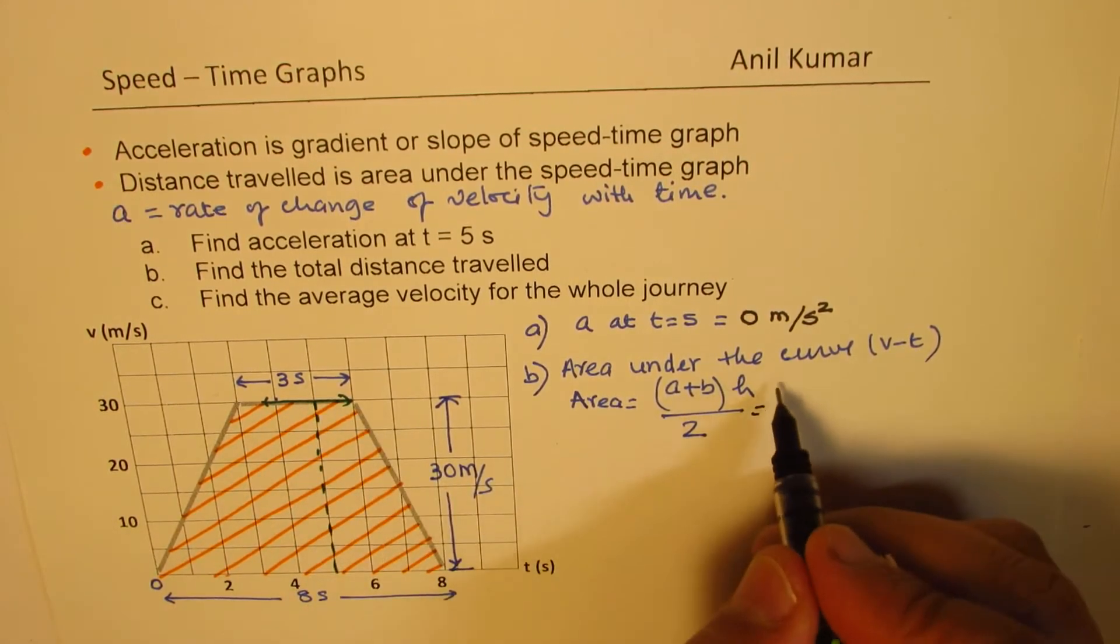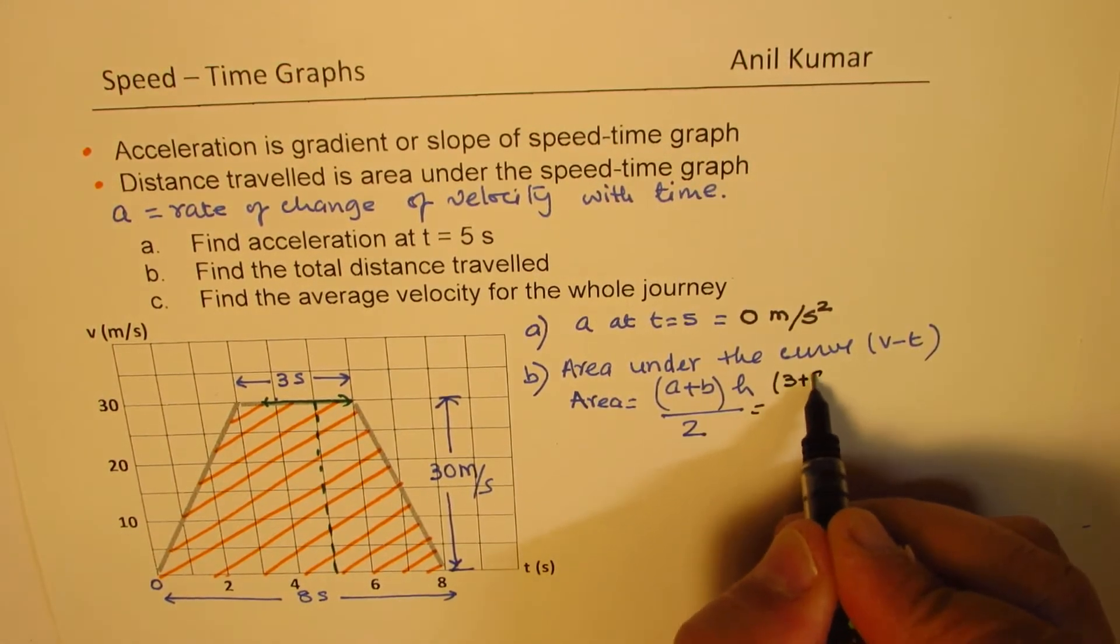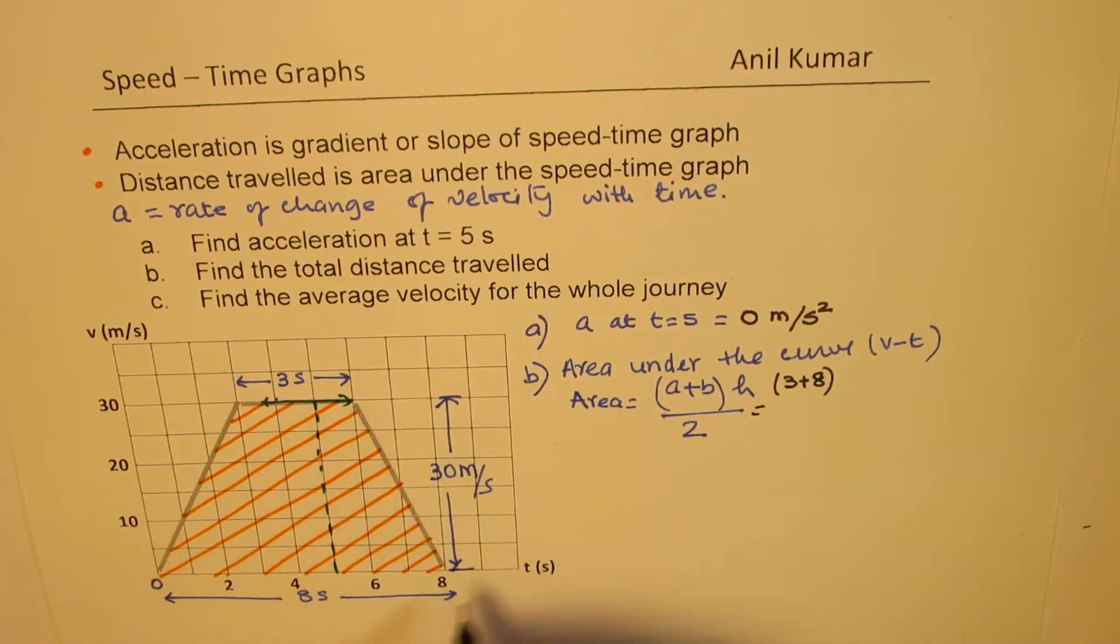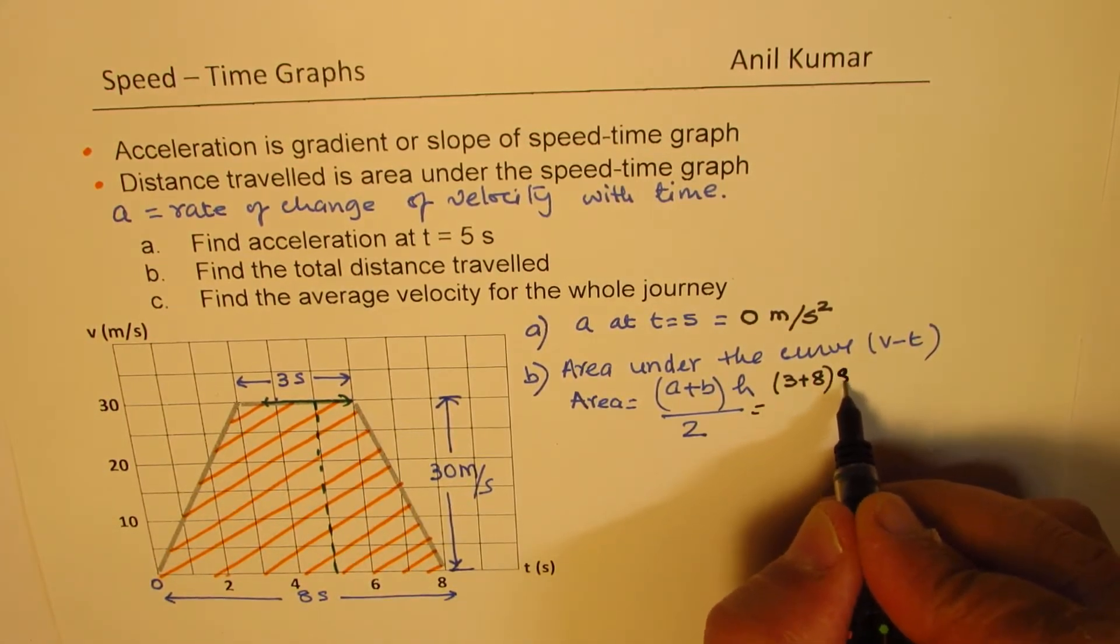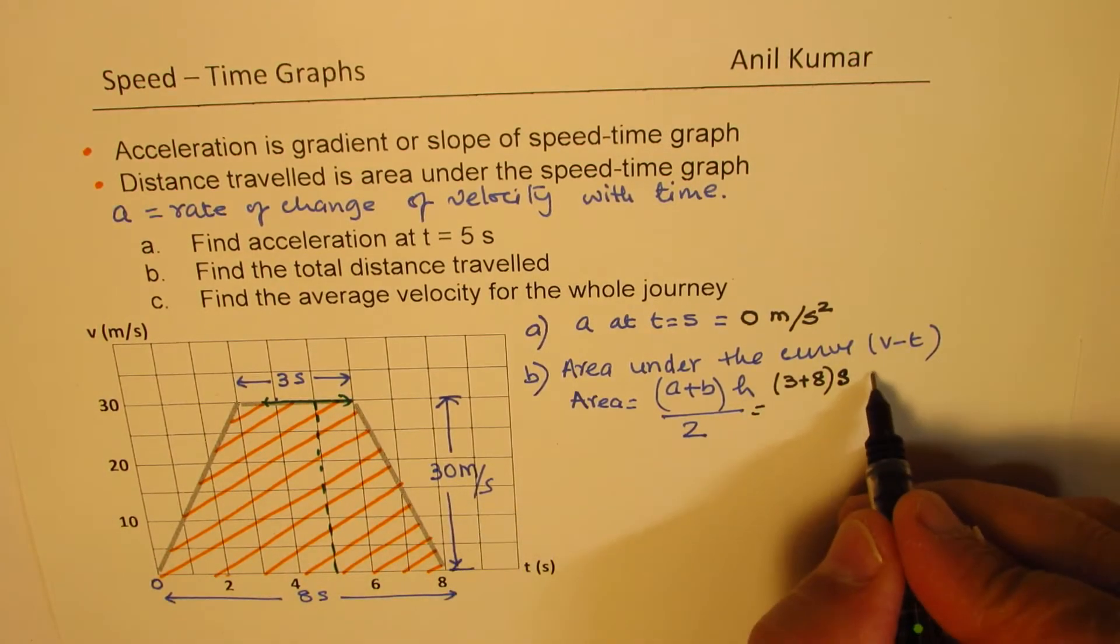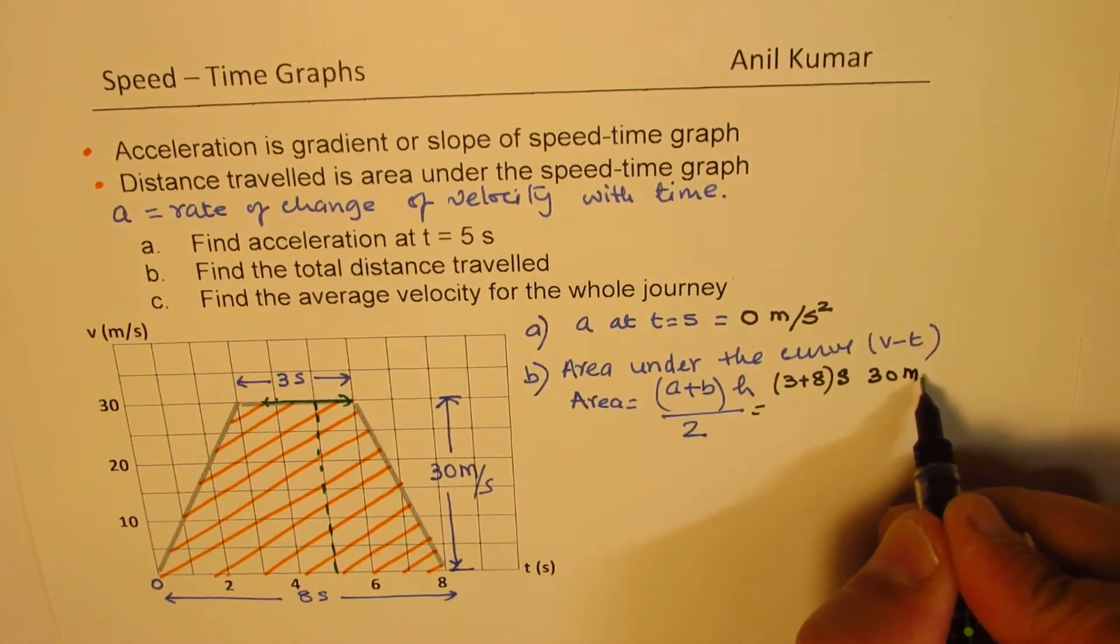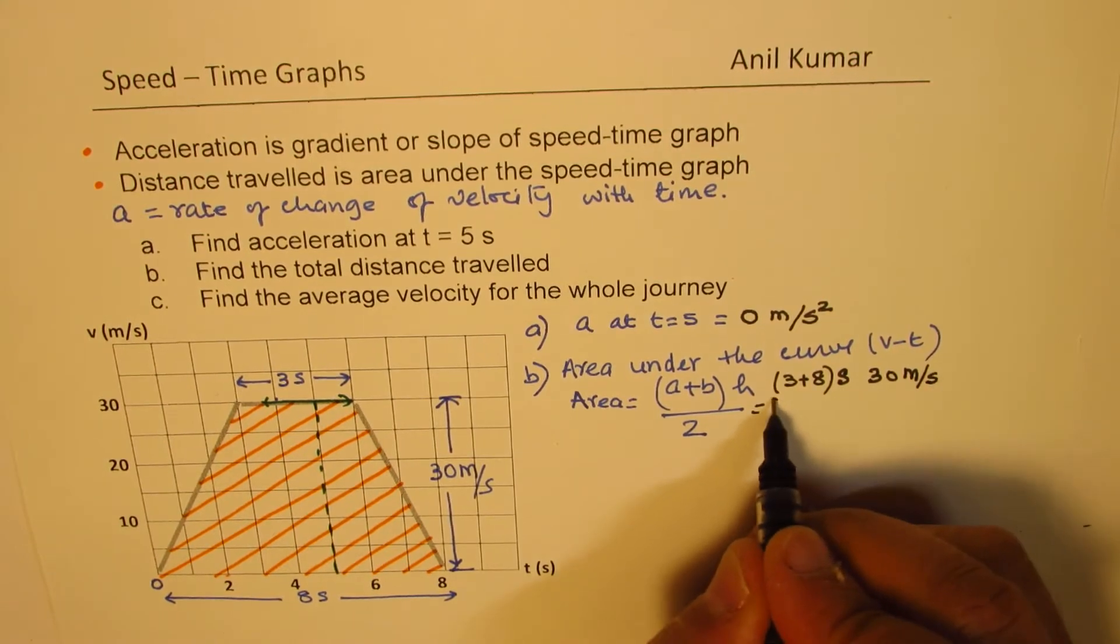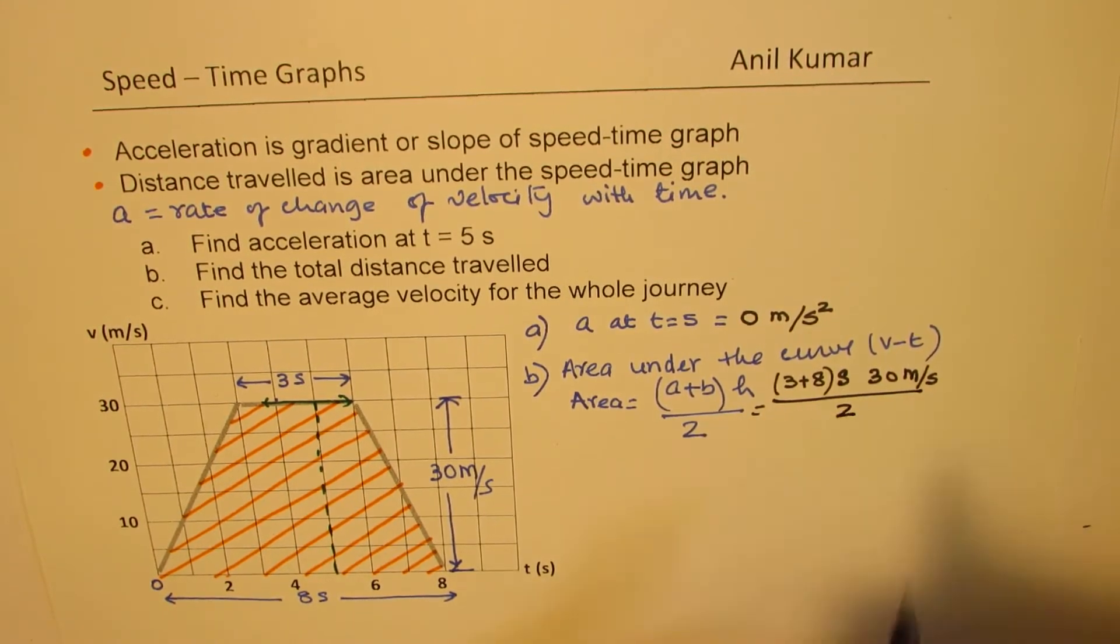Substituting these values, what do we get? 3 plus 8. Now, this unit 3 plus 8 is better to write it in seconds. So this is seconds. As far as height is concerned, it is 30. The units are meters per second. And we are going to divide this by 2.